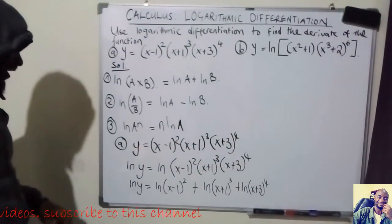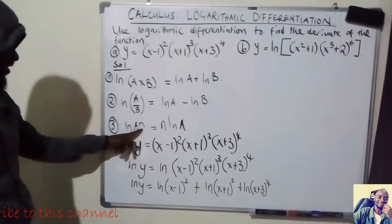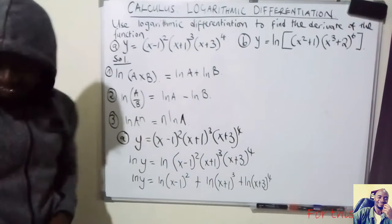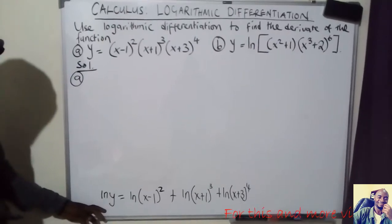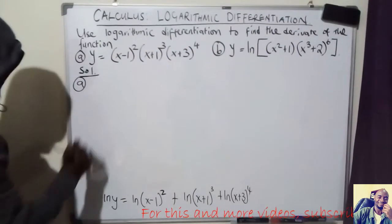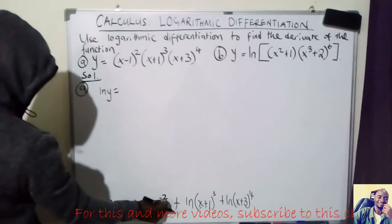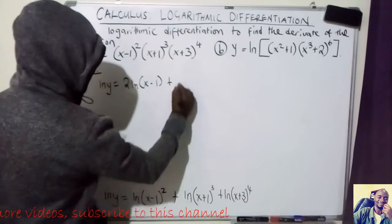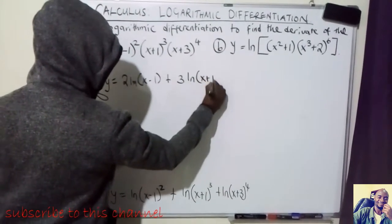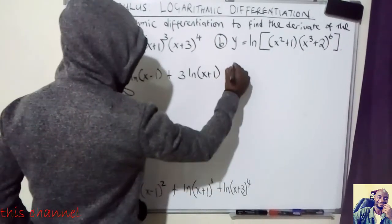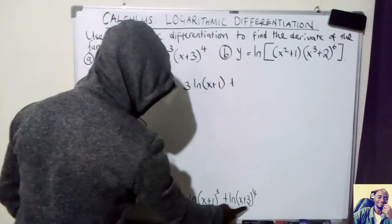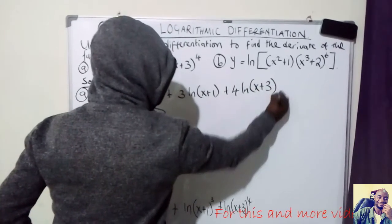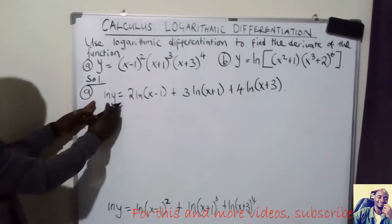Once I've expanded, I need to apply rule number three so that the powers come down in front. So this becomes: ln(y) = 2·ln(x−1) + 3·ln(x+1) + 4·ln(x+3). The next thing we are going to do is differentiate both sides with respect to x.